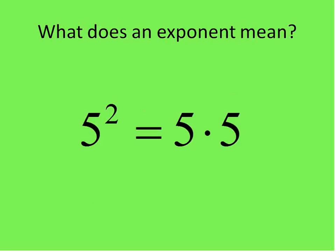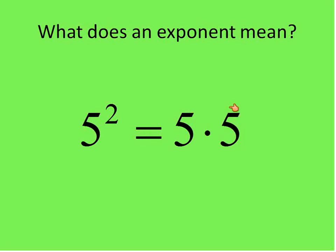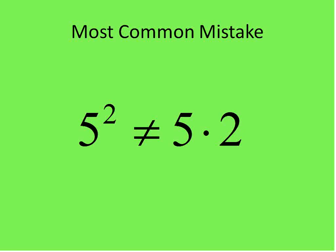So what does an exponent mean? When you have a base of 5 raised to the power of 2 — that's another way of saying raised to the power of something — what that means is 5 times itself that many times. So it means 5 times 5. The power of 2 means it's multiplied 2 times. It does not mean 5 times 2. This is the most common mistake I see with exponents — 5 to the power of 2 is definitely not 5 times 2. Remember, it's 5 times itself that many times. Very common mistake — I just wanted to address that.